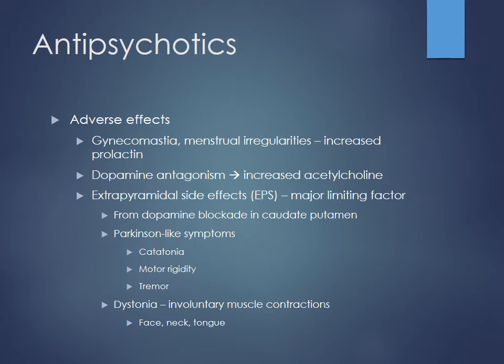Dopamine antagonism also causes a reciprocal increase in acetylcholine. By giving dopamine blockers, you're essentially mimicking the effects of parkinsonism — Parkinson's disease is basically a decrease in dopamine fired by the brain. So with these medications, especially those targeting D2 receptors specifically, you'll see parkinson-like side effects. This leads to extrapyramidal side effects, or EPS — one of the major limiting factors for first-generation antipsychotics, and almost non-existent with second-generation agents.